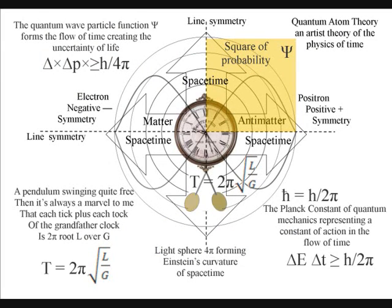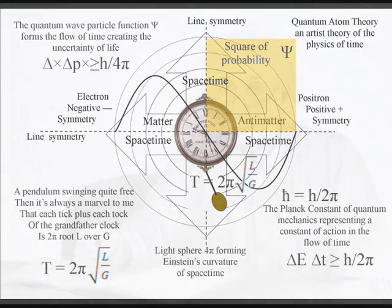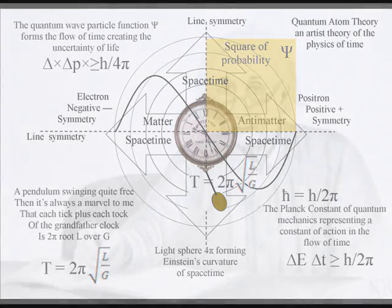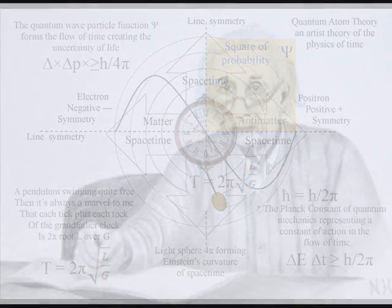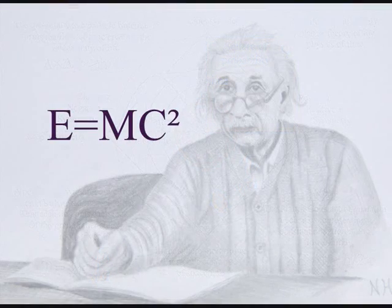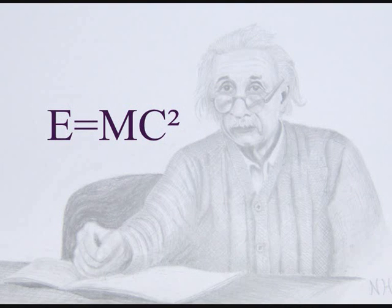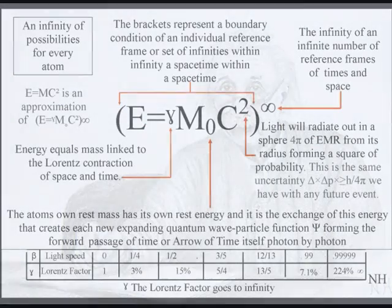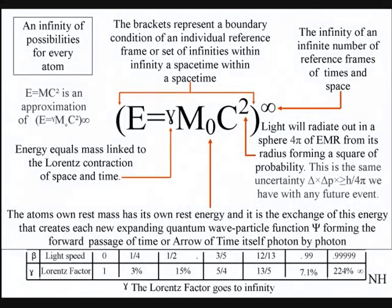This gives us a deeper understanding of time and a reason why we have a future and a past. Energy equals mass times the speed of light squared is the most famous equation in physics. But could this equation give us an objective understanding of the universe?